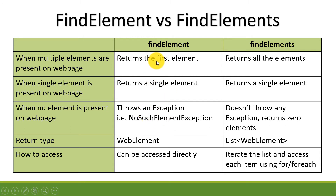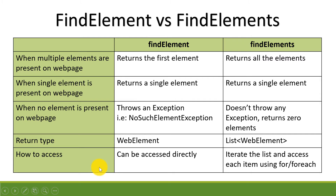So these are the differences. The major difference is: findElement always returns one single element, whereas findElements returns multiple elements. Another main difference is that if the element is not present, findElement throws an exception, but findElements does not throw an exception.